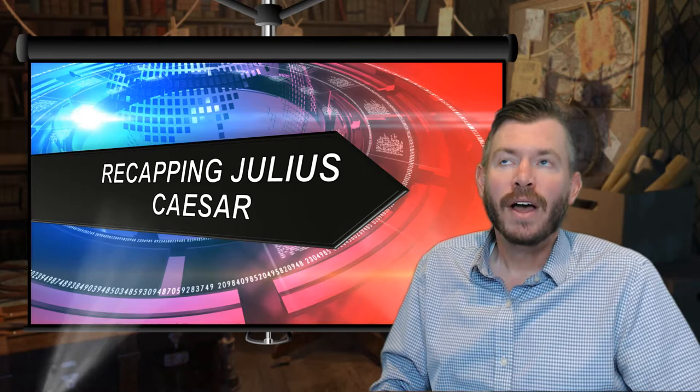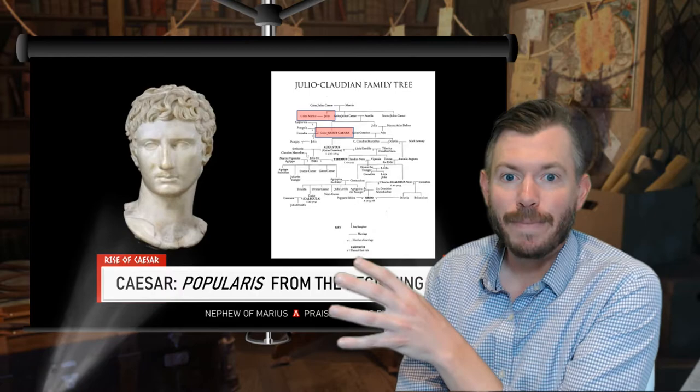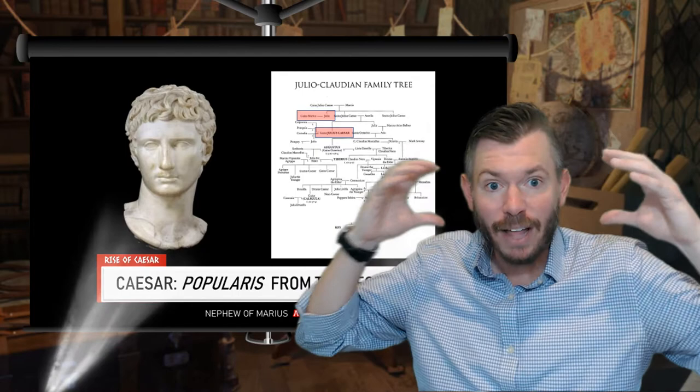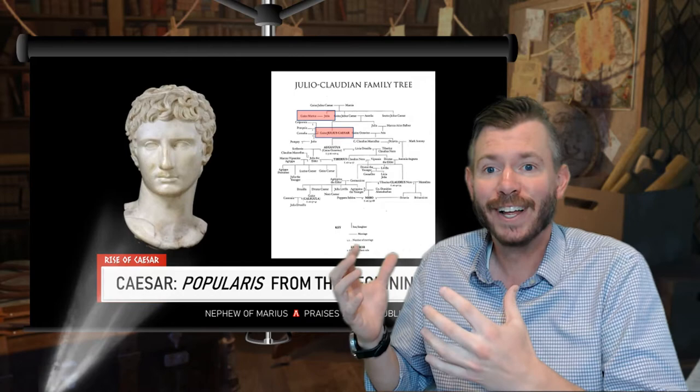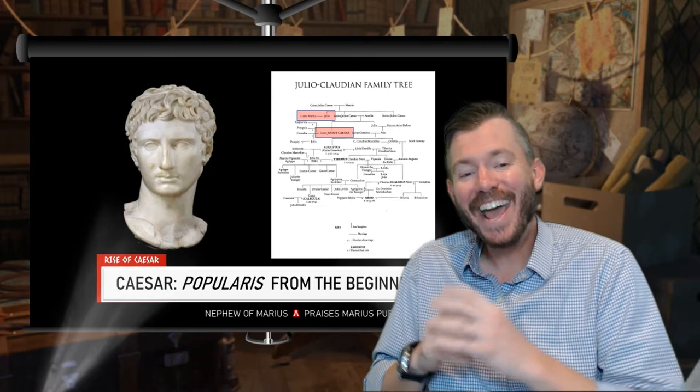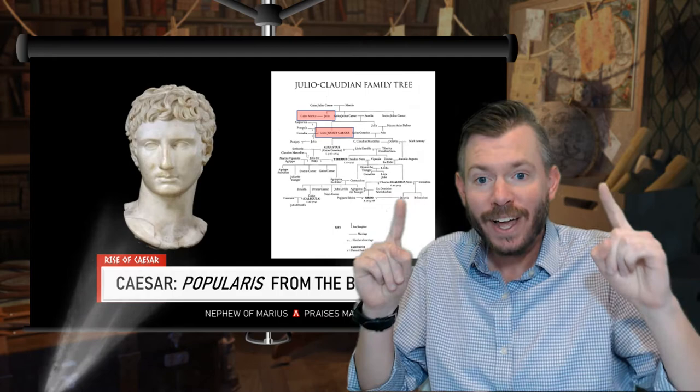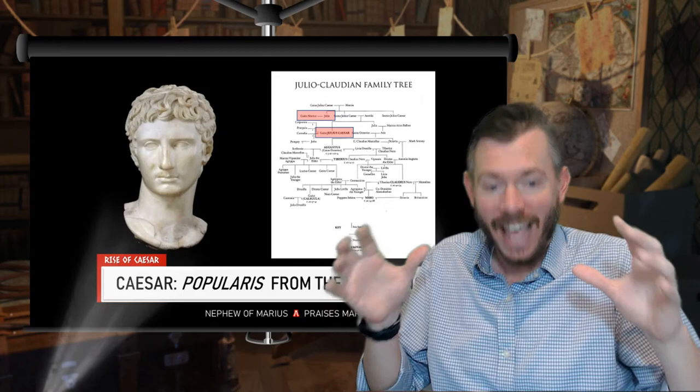Recapping Julius Caesar — before we even get into Caesar, I want to start way back with the beginning of the Republic. Remember Lucius Junius Brutus and Lucius Tarquinius Colatinus, the two senators who overthrew Tarquin the Proud, the last king of Rome, because he was being a total jerk. From that day, the guiding ideology of the Republic has been no kings in Rome. That's the core thing — no kings in Rome — and that's going to be a big deal later in today's lecture.